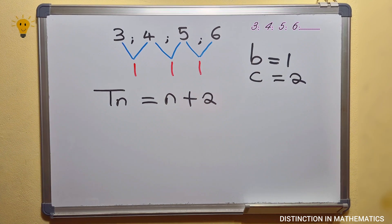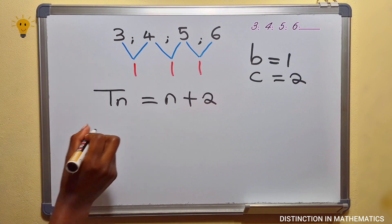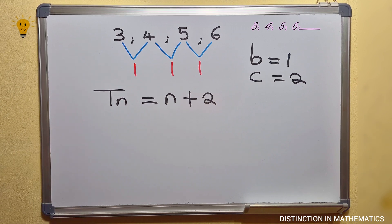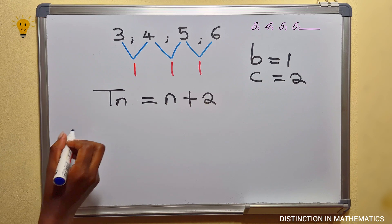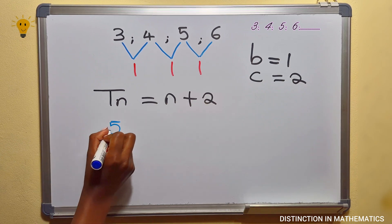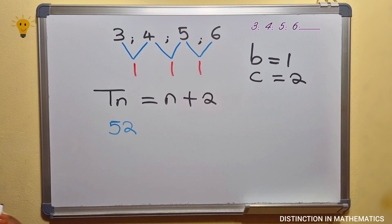The next question is: which term of the number pattern is equal to 52? What they're asking you here is the position of this value, 52, on this pattern. They're basically telling you that a certain position on this pattern is 52, and they're asking which position it is. So instead of Tn, you're going to have 52 and solve for n.